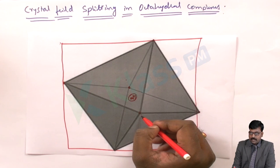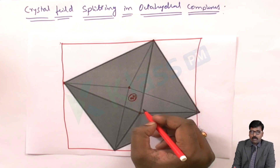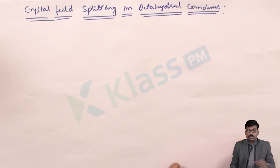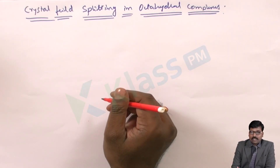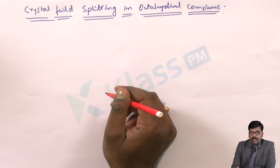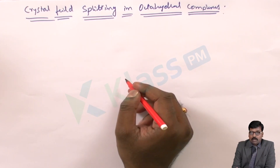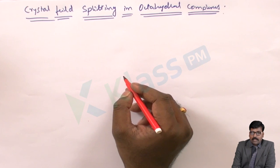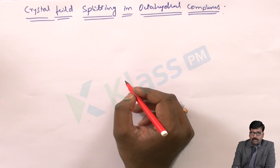That is the reason in octahedral complexes the EG group — the axial orbitals — will experience more energy from the ligands. So the splitting is done such that the EG group axial d orbitals show a higher energy level than the T2G group.